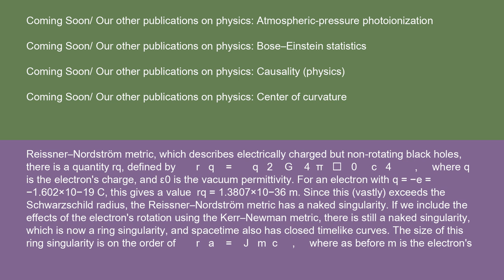If we include the effects of the electron's rotation using the Kerr-Newman metric, there is still a naked singularity, which is now a ring singularity, and spacetime also has closed timelike curves.